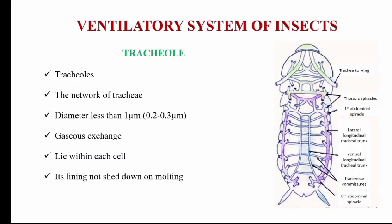The tracheoles are the smaller branches of the tracheal system. There is no clear distinction between tracheae and tracheoles, but the tracheoles are intracellular. The tracheoles are approximately one micron in diameter. The cuticular lining is retained during molting.